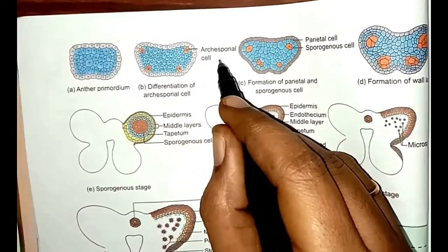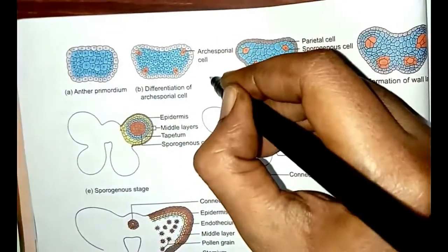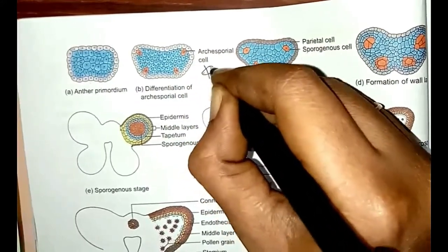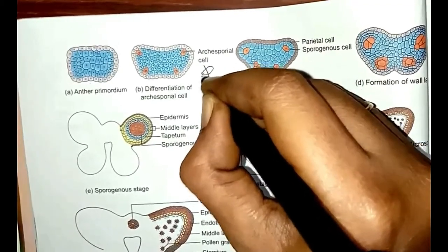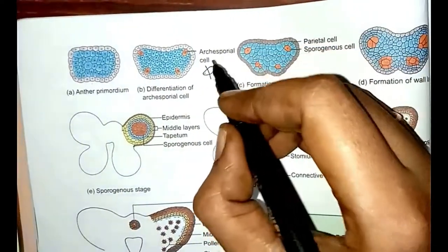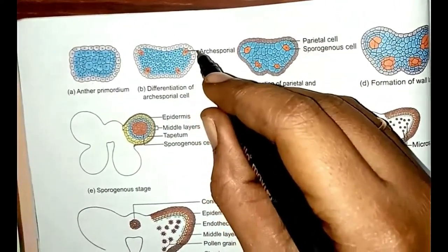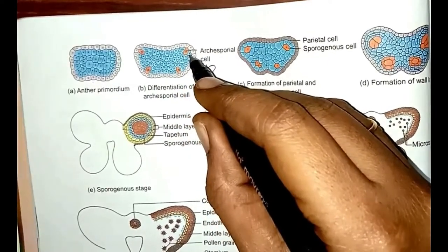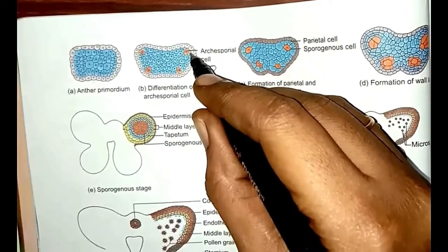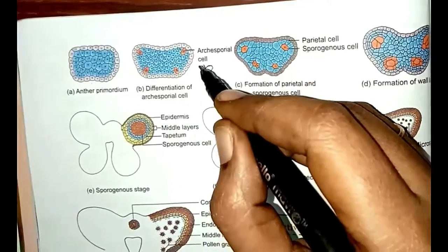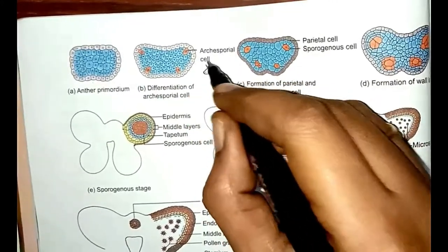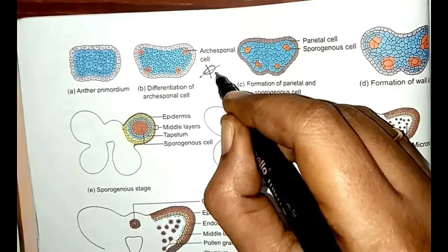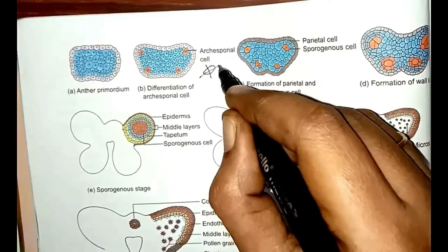The archesporial cells divide periclinally — parallel to the epidermal layer — to form two cells. The cell towards the epidermis is called the parietal cell and the cell towards the center is called the primary sporogenous cell. The primary parietal cells then undergo continuous periclinal as well as anticlinal divisions to form two to five layers of anther wall, composed of three layers: the outer epidermis, then the endothecium, then the middle layer, and innermost the tapetal cells.